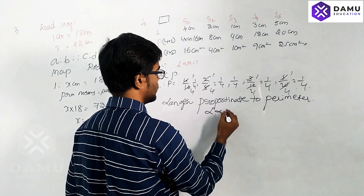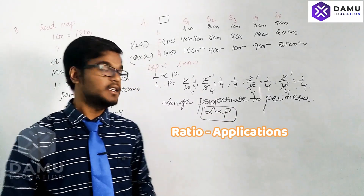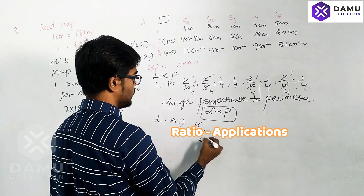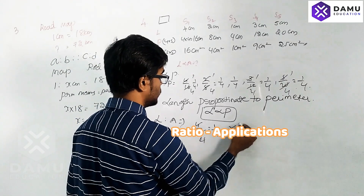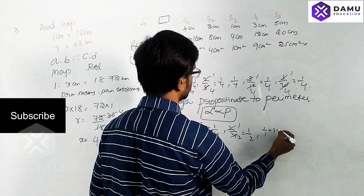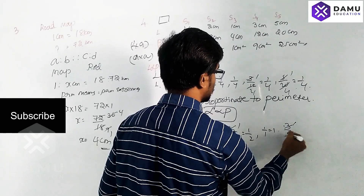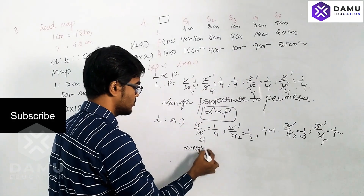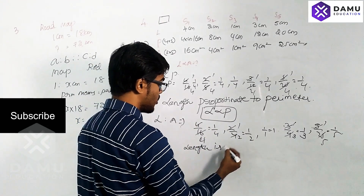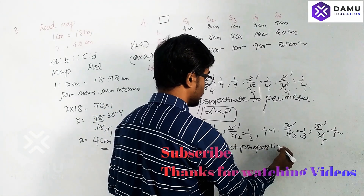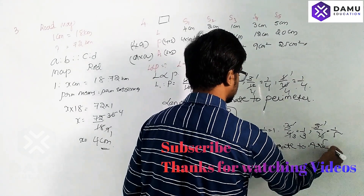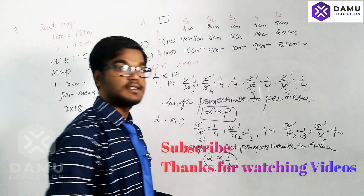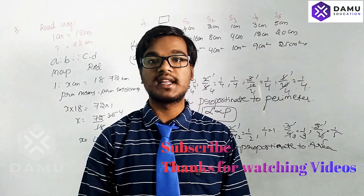Now checking if length is proportional to area: 4/16 = 1/4, 2/4 = 1/2, 1/1 = 1, 3/9 = 1/3, 5/25 = 1/5. All values are different, so length is not proportional to area. In fact, length is inversely proportional to the ratio with area. Thanks for watching — please subscribe and support us.